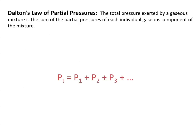Dalton's law of partial pressures says that the total pressure exerted by a gaseous mixture is the sum of the partial pressures of each individual gaseous component of the mixture. So the total pressure, P sub T, is equal to the individual partial pressures of whatever gases compose that mixture.